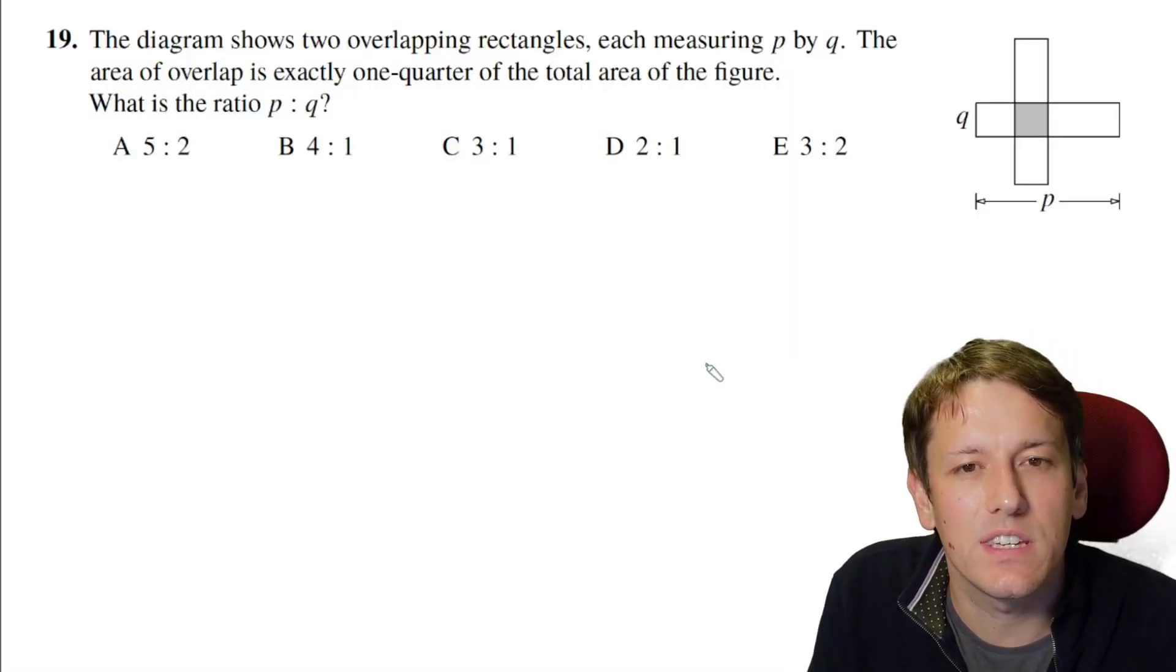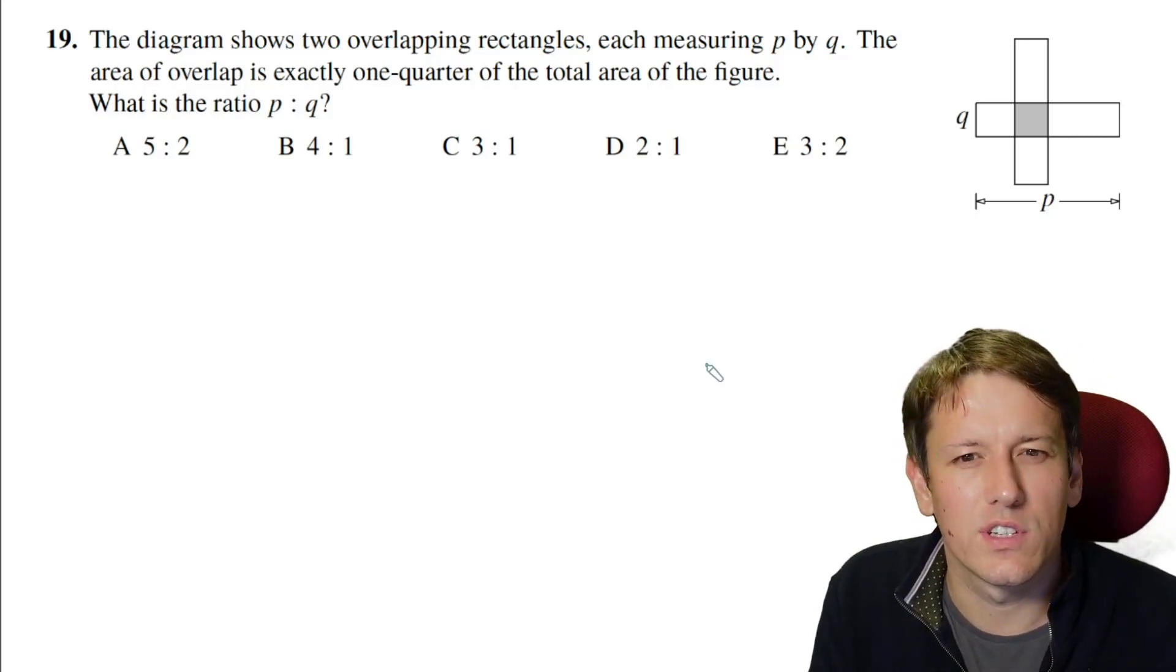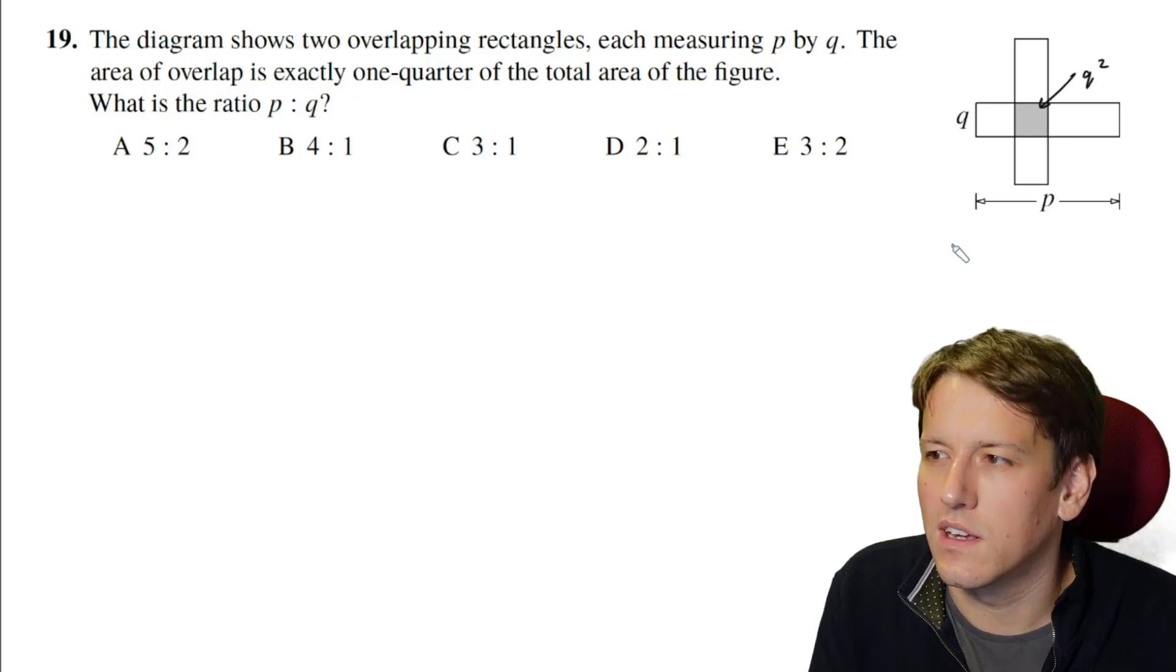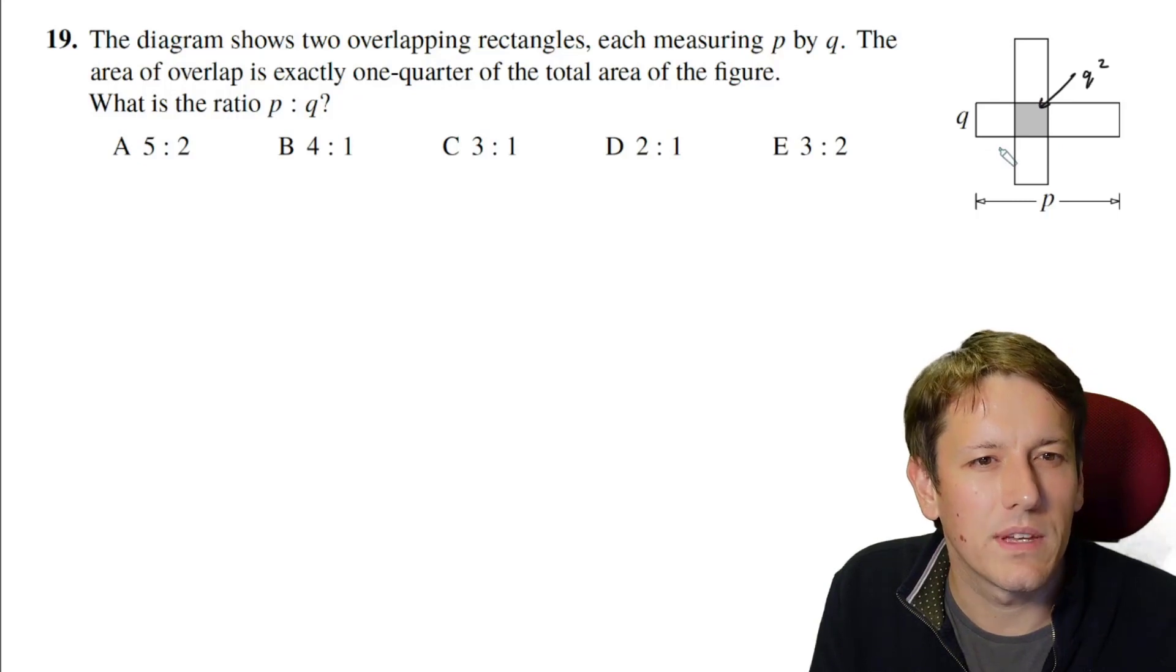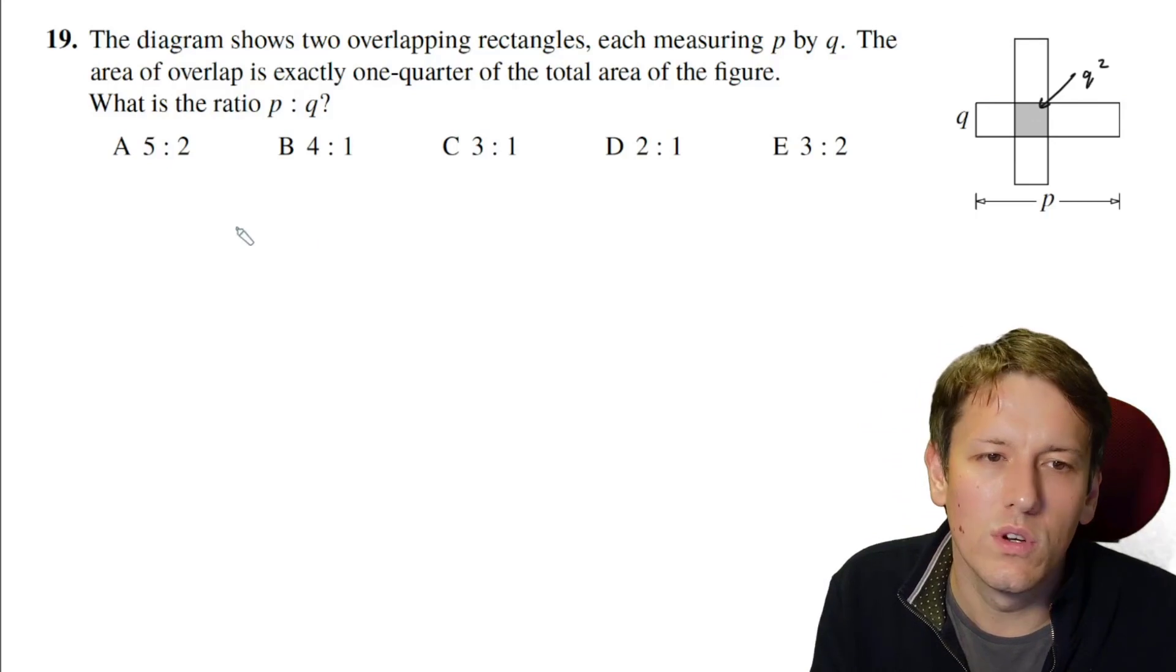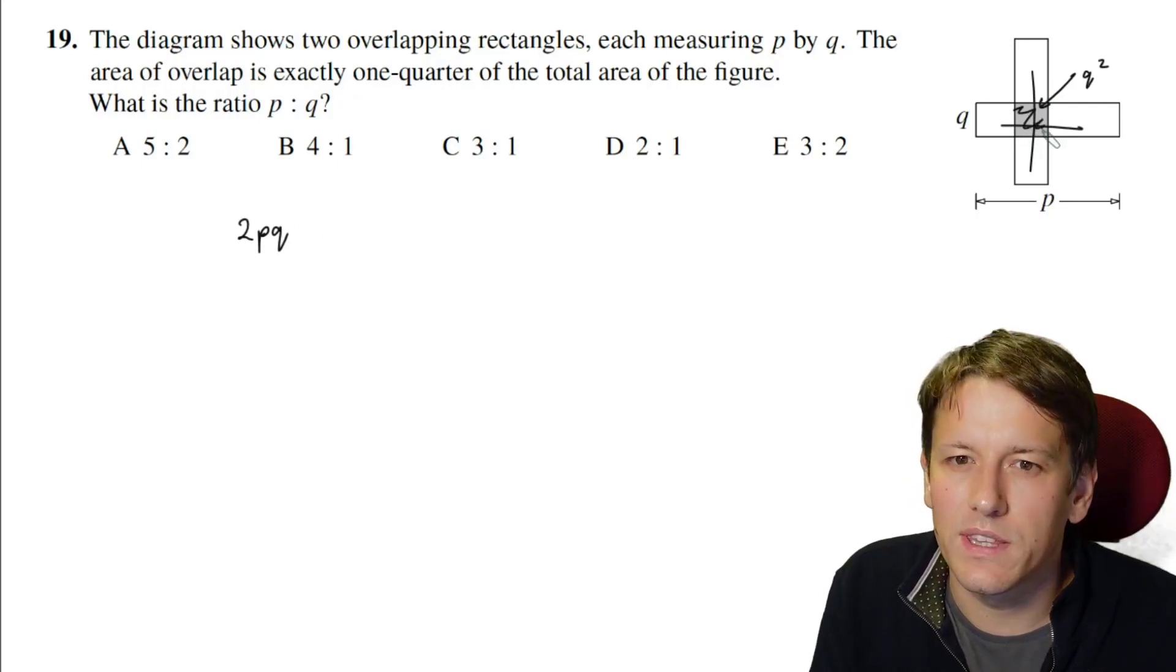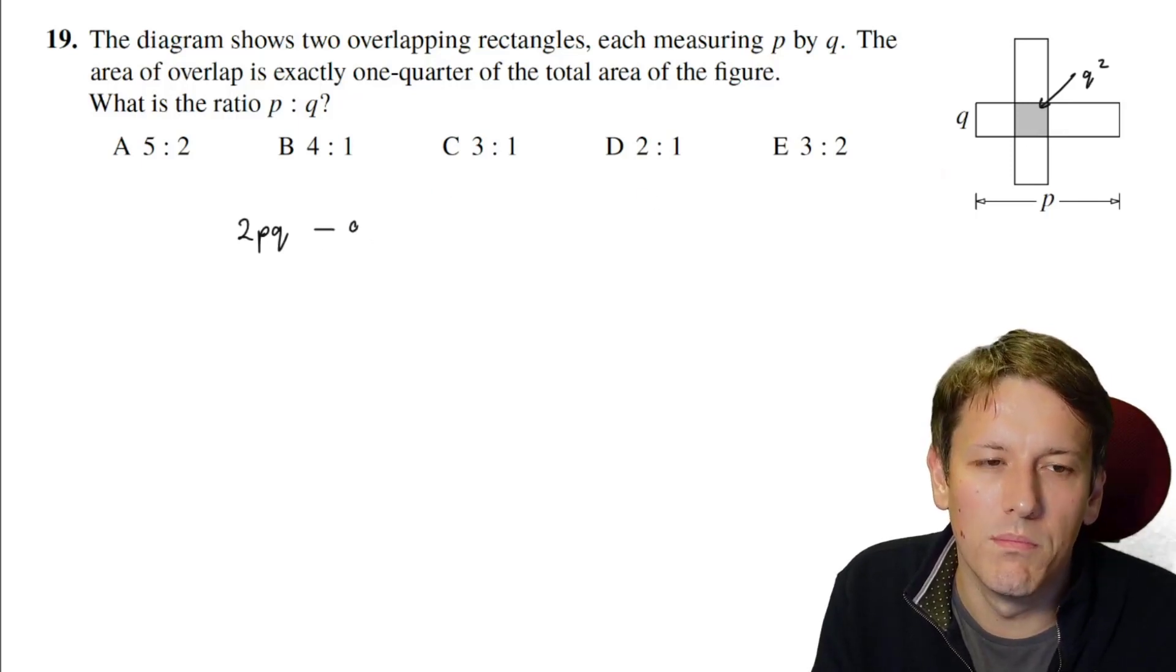The diagram shows two overlapping rectangles, each measuring P by Q. The area of the overlap is exactly one quarter of the total area of the figure, and then we want to know what's the ratio of P to Q. So don't get too far ahead of yourself in this question, just do it one step at a time. Let's just write down all of the relevant areas. So firstly, this square in the middle is clearly area Q², right? This length is Q, and it's an overlapping square here because if that's Q, that's also Q, the identical rectangles. Each of the individual rectangles has area P times Q. So if I took the total area by doing like this rectangle plus this rectangle, I would overcount by this square here, right? So I'd have counted that bit twice.